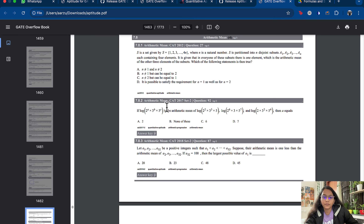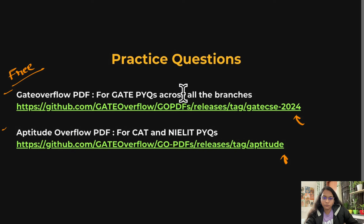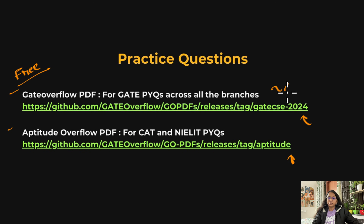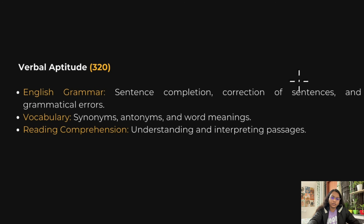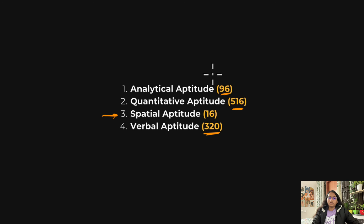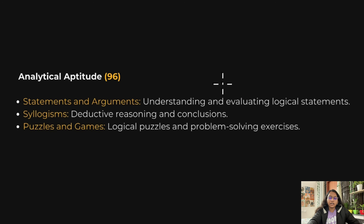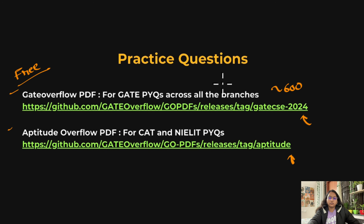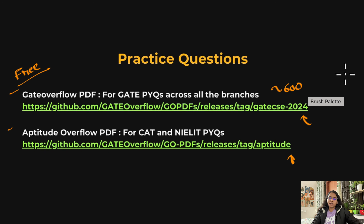In the GATE Overflow PDF, excluding verbal aptitude, there are around 600 questions from analytical, quantitative, and special aptitude combined. If you solve just 20 questions per day, in one month you'll complete all 600 PYQs — and this is more than enough practice for GATE.